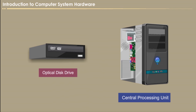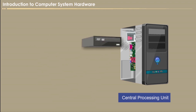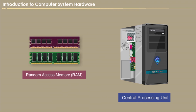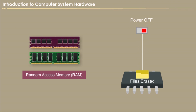Optical disk drive. An optical disk drive, that is ODD, is a disk drive that uses laser light or electromagnetic waves within or near the visible light spectrum as part of the process of reading or writing data to or from optical disks. Random access memory, that is RAM. RAM provides the temporary storage of data and instructions. RAM is volatile — that is, computer memory that needs power to preserve the stored data. RAM stores data and instructions during the execution of instructions.